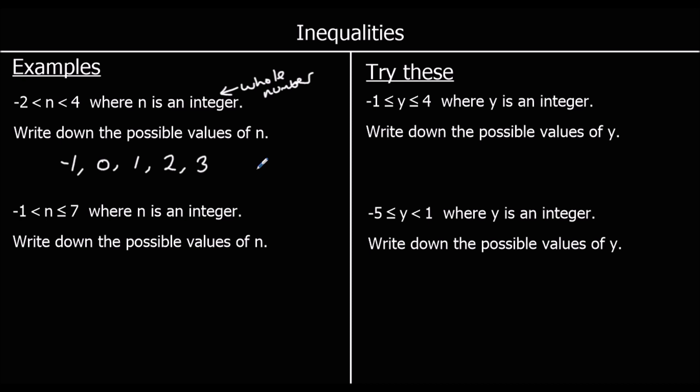For the second one, n is bigger than minus 1 and less than or equal to 7, where n is an integer. Write down the possible values. It can equal 7 but it can't equal minus 1. So that would be 0, 1, 2, 3, 4, 5, 6, and 7 — because it can equal 7.